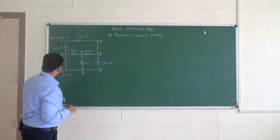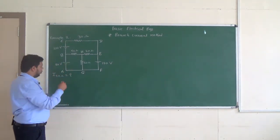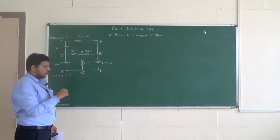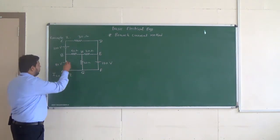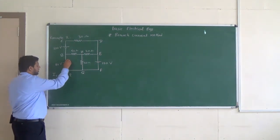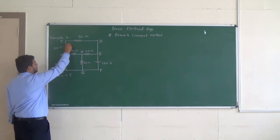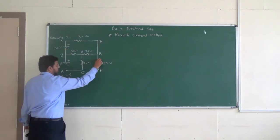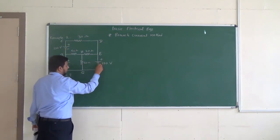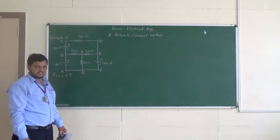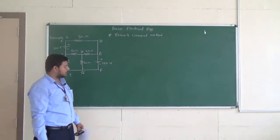In the second step we have to indicate the polarity of the voltage sources. The long line indicates plus and the short line indicates minus. So the polarities are: plus, minus, plus, minus, plus, minus. That is step number 2.